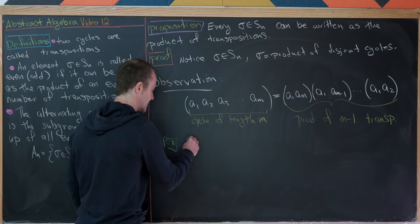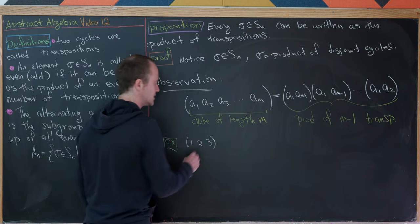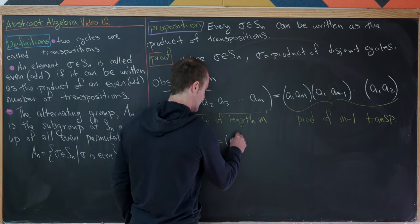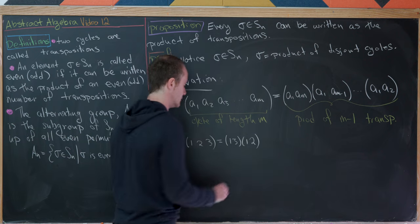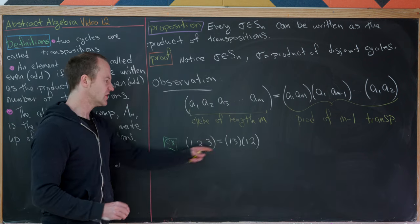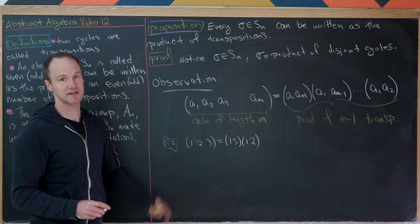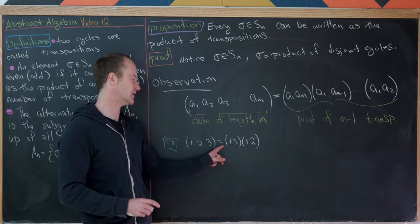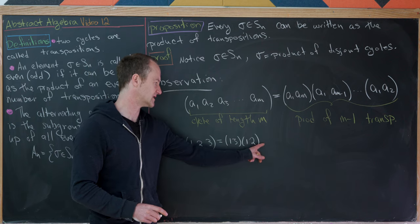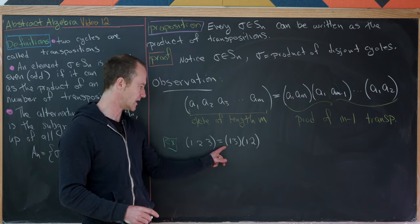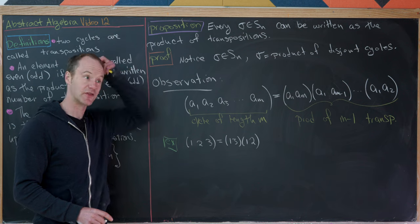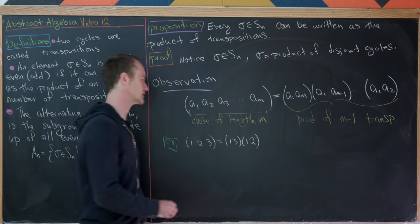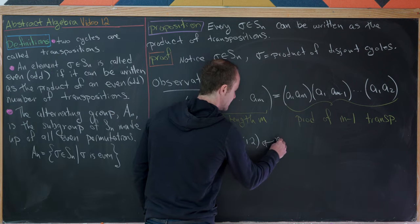Take the 3-cycle (1, 2, 3). By this trick, we can write it as (1,3)(1,2). We can check: sending 1 gives 2, sending 2 gives 1 then 3, and 3 gets sent back to 1. This is the product of two 2-cycles, so it is even. A 3-cycle is an even element of S3.